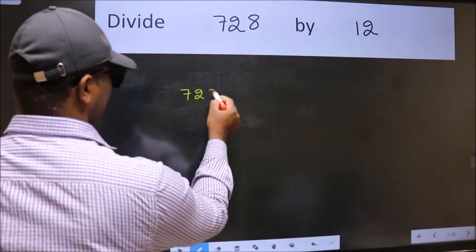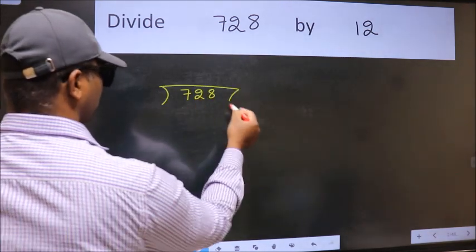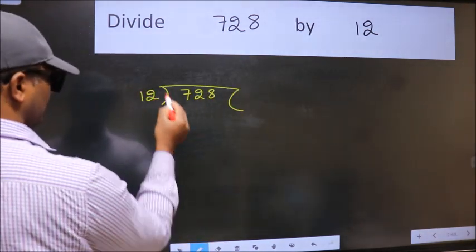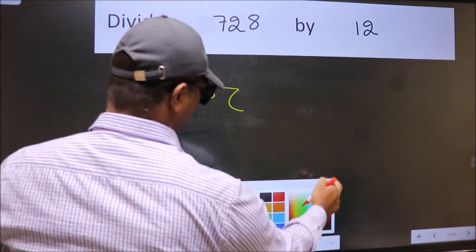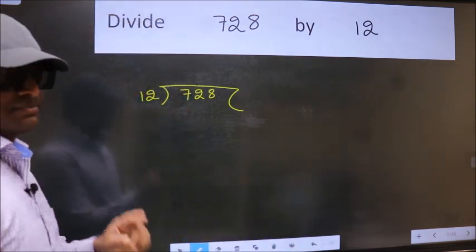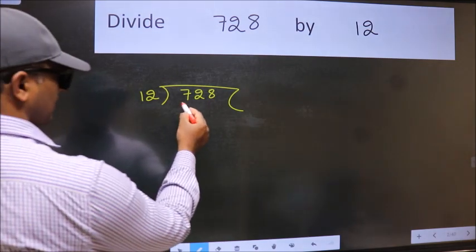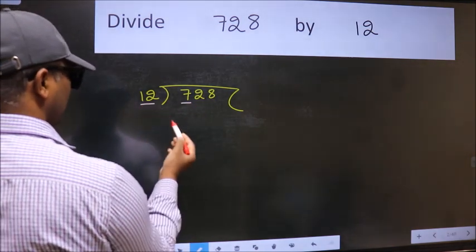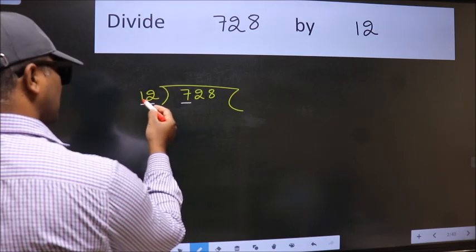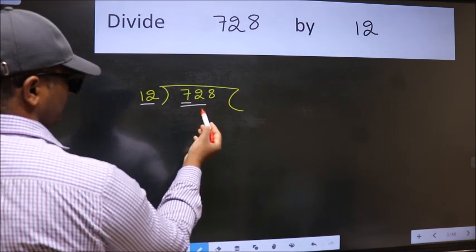728 here, 12 here. This is your step 1. Next, here we have 7 and here 12. 7 is smaller than 12, so take two numbers, 72.